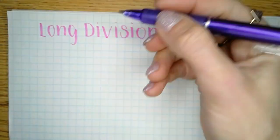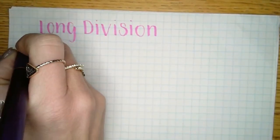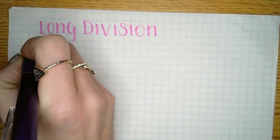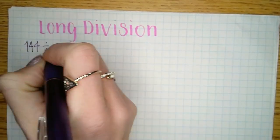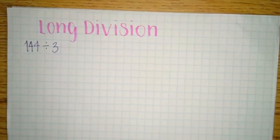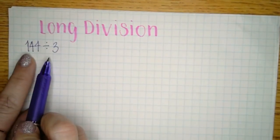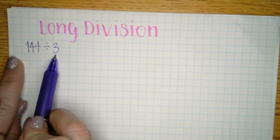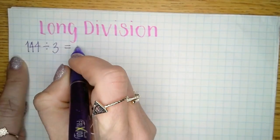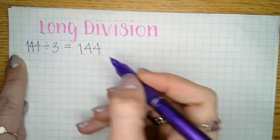Let's talk about long division fourth-grade style. Say I asked you to divide 144 by 3. I could totally write 144 divided by 3 in a horizontal way — that would be more like horizontal division where you're going completely sideways.